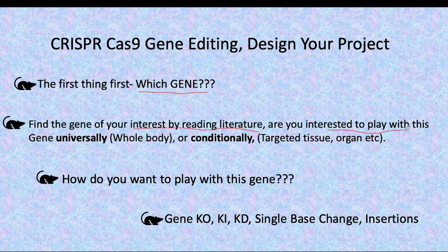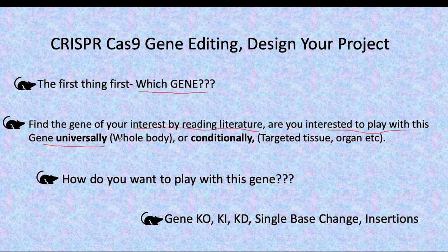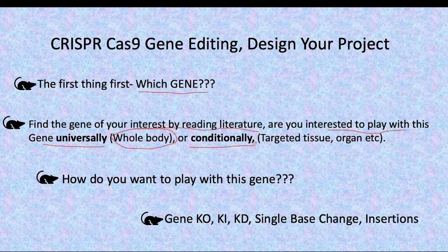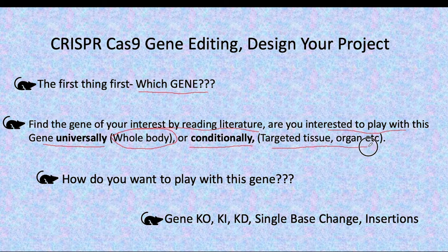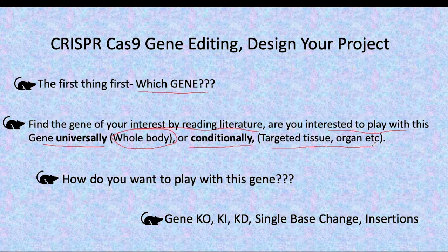It is very important to decide where you want to work with this gene — either you want to play with this gene universally, meaning you want to target the gene in the whole body, or you want to work with this gene conditionally, meaning you want to target a specific tissue or organ, for example lungs, heart, or brain.